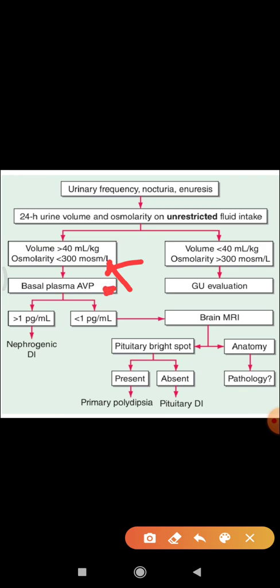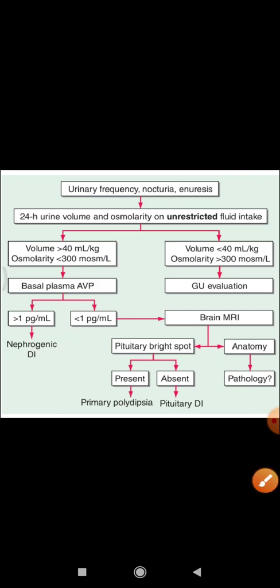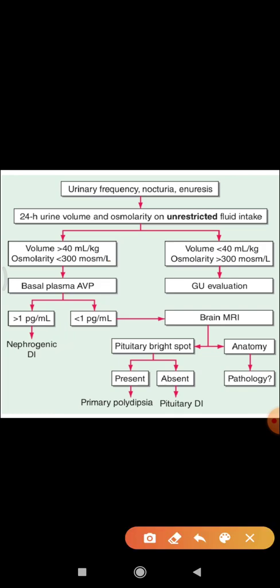If it is greater than 1 picogram per mL, then it is nephrogenic diabetes insipidus, because ADH is either normal or increased in nephrogenic diabetes insipidus. But if it is less than 1 picogram per mL, it can be either primary polydipsia or pituitary diabetes insipidus.